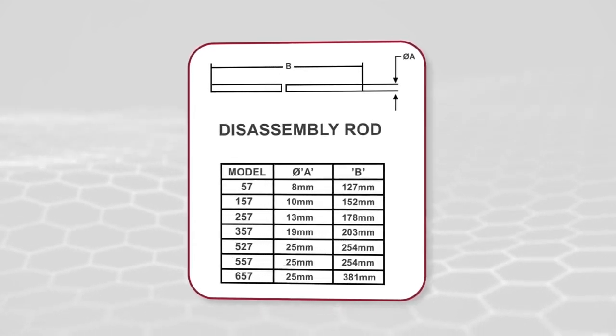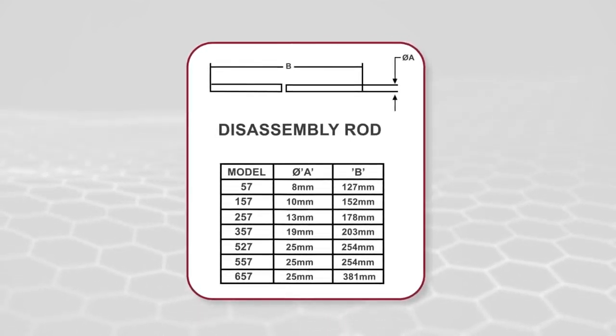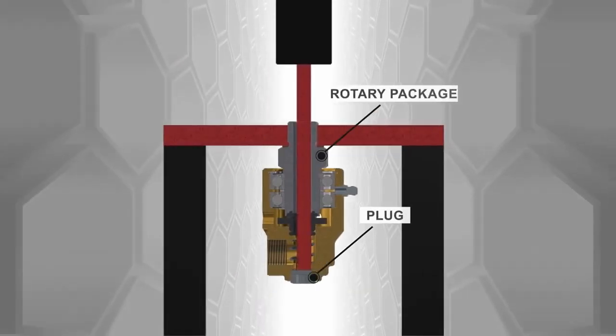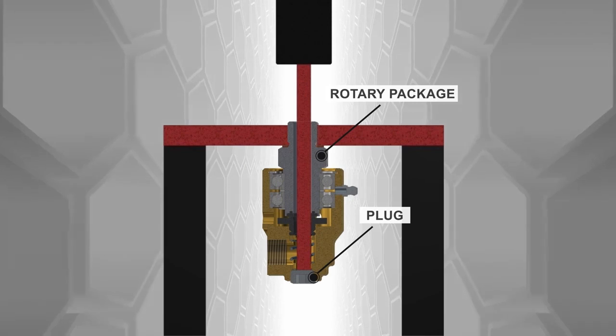You'll next need to make a disassembly rod. Refer to the chart for dimensions for your specific 57 series model. Press on the plug with the disassembly rod to carefully remove the rotor package from the union.